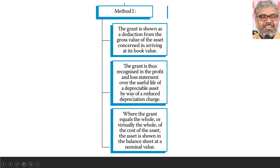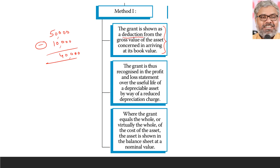Method 1: the grant is shown as a deduction from the gross value of the asset concerned in arriving at its book value. It is going to be reduced from the value of the fixed asset. For example, if an organization purchased a fixed asset worth 50,000 rupees and the government gave a grant of 10,000 rupees, that grant is reduced from the original cost. The actual book value of the fixed asset after reducing the government grant becomes 40,000 rupees.